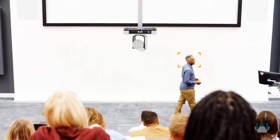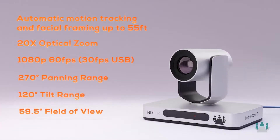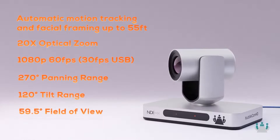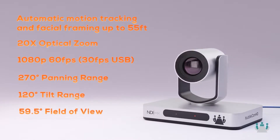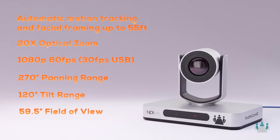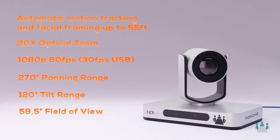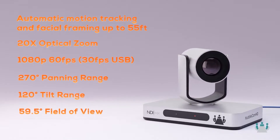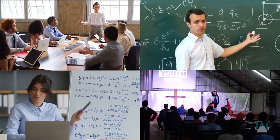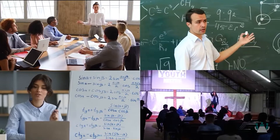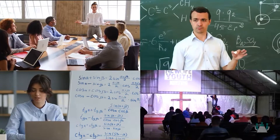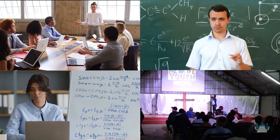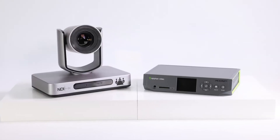The Huddlecam HD SimpleTrack Lite is an auto-tracking camera system that can be set up to follow presenters from up to 55 feet away. The SimpleTrack Lite features a powerful 20x optical zoom, allowing you to capture close-up views of important areas such as whiteboards and demonstration tables, all in 1080p quality for your videos.